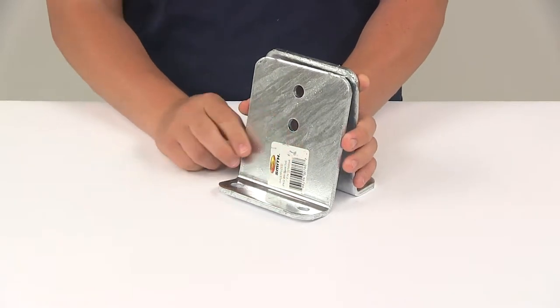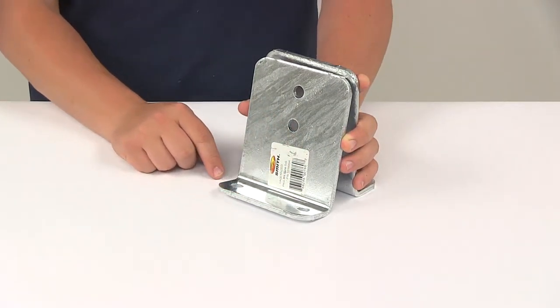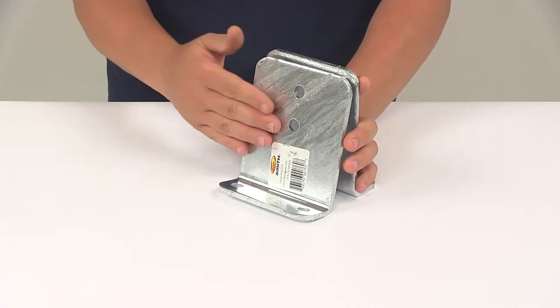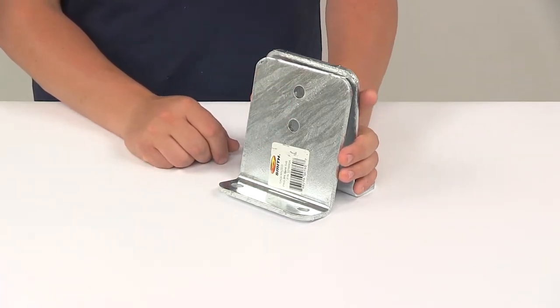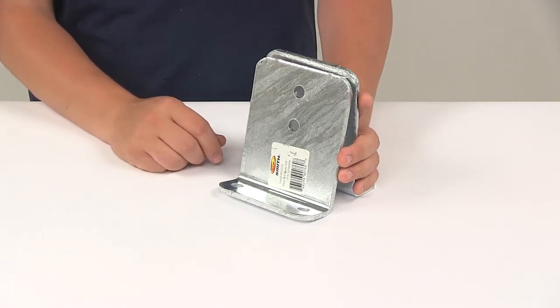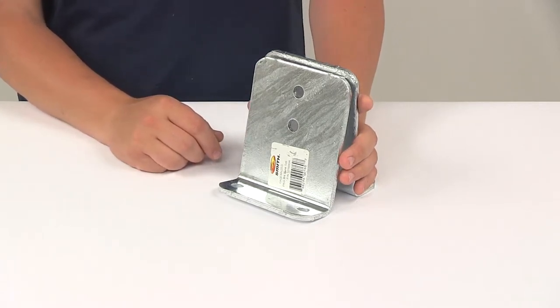It will require two half inch diameter U-bolts for installation, one U-bolt per bracket. Those are available and sold separately at eTrailer.com. I would recommend part number CE15283GA-2.